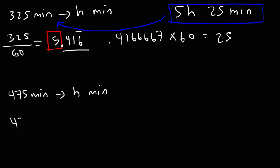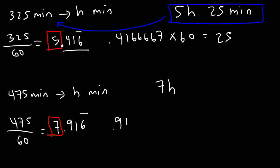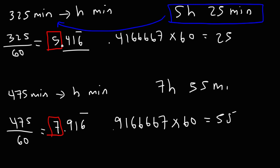For the second example, take 475 and divide by 60, giving 7.916 repeating. Take the 7 as our hours, and then 0.9166667 multiplied by 60 gives 55. So the answer is 7 hours and 55 minutes. To confirm: 7 times 60 is 420, plus 55 gives you 475.